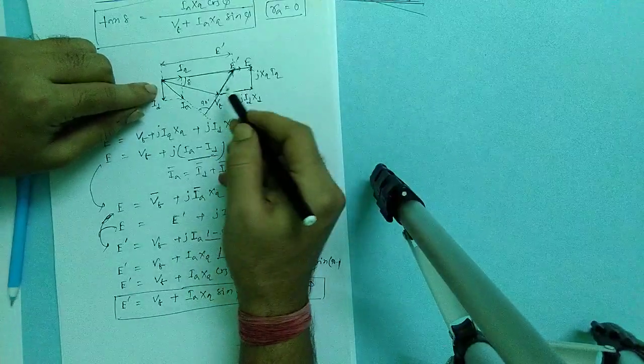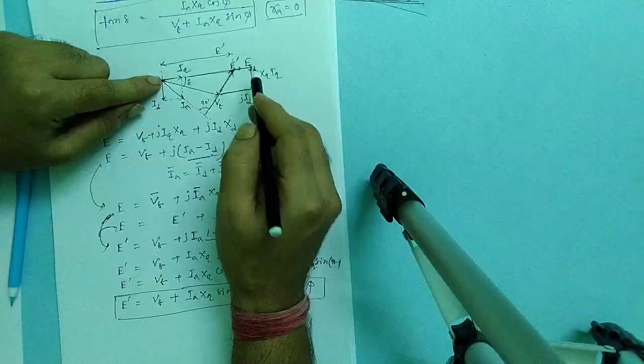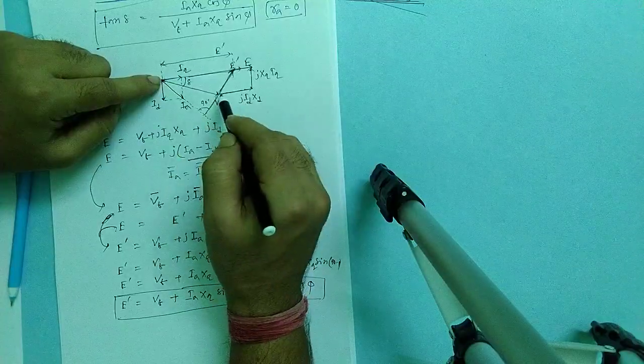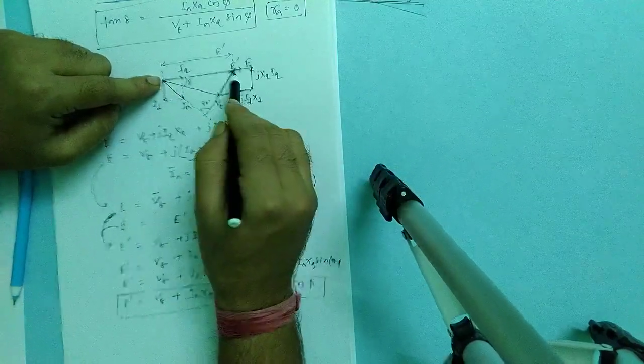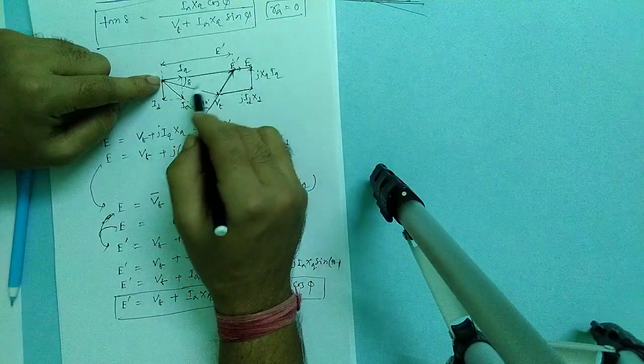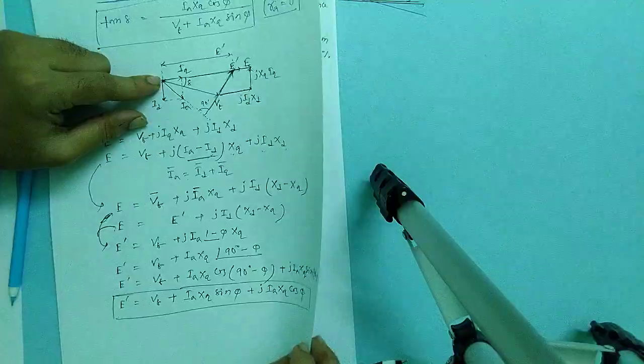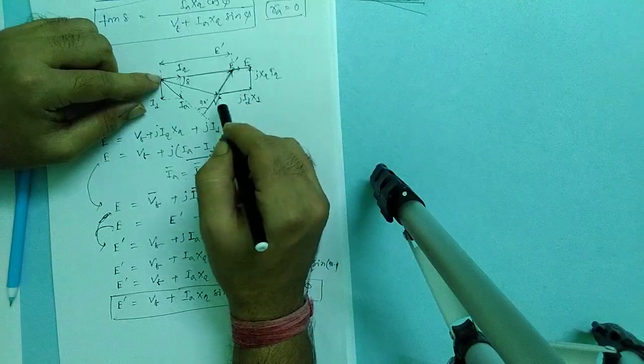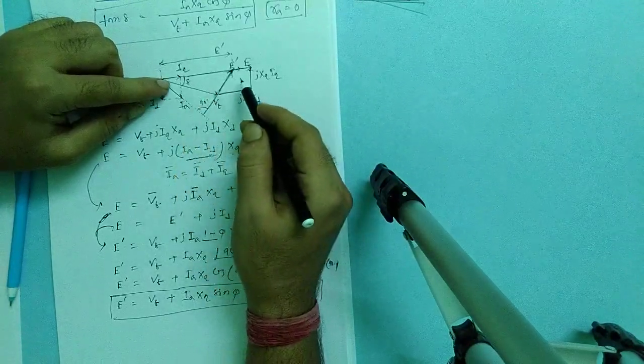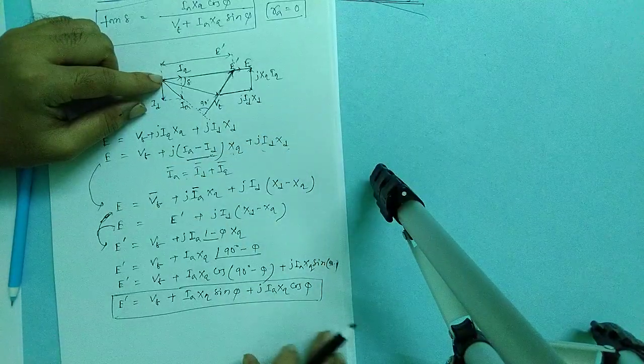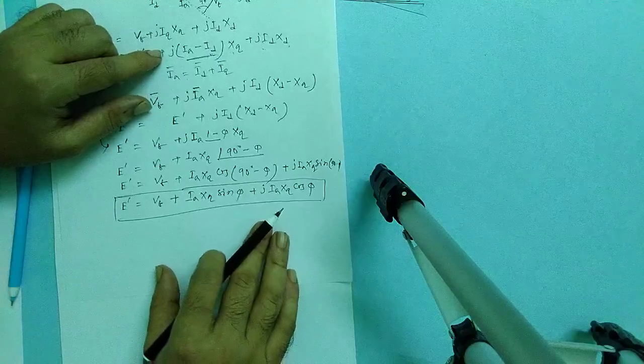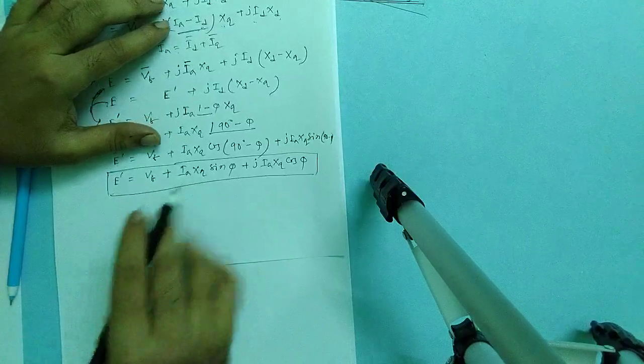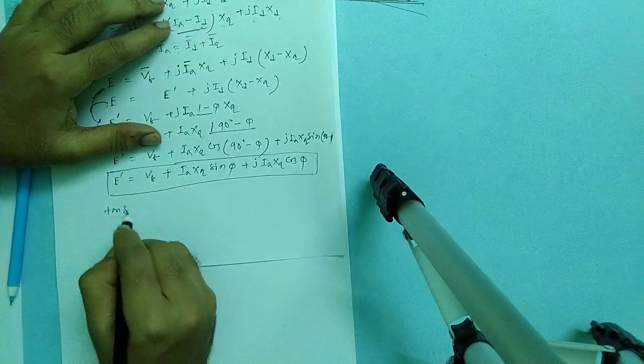The angle between V_t and E' dust is same. The angle between V_t and E' dust, because E' dust and E are in same line, so angle will be also same. So if we can determine the angle between E' dust and V_t which is del, we can also calculate the angle between V_t and E. What is angle of E' dust?